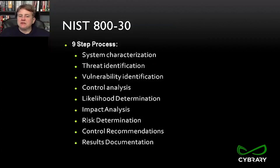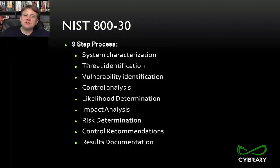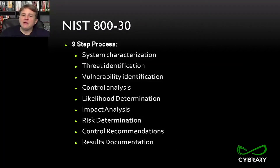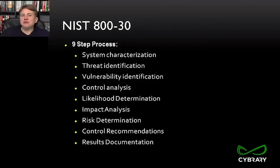NIST 800-30 really goes through the full gamut of dealing with risks. We characterize our system — basically we look at the value of the assets: does the system hold top-secret data or sensitive but unclassified? Then we look at threats and vulnerabilities — a threat is what could cause harm, and a vulnerability is where the weakness is. Then we analyze the controls already in place and look at likelihood and impact, sometimes called probability and impact or likelihood and severity — how likely is it to happen, and if it does, how big is the impact? Then we determine the amount of risk, which drives us to recommend controls, and ultimately we document our decisions and justify the choices we've made.